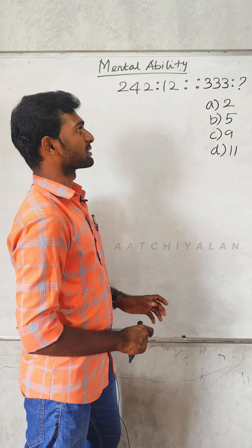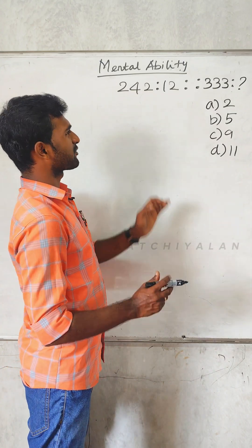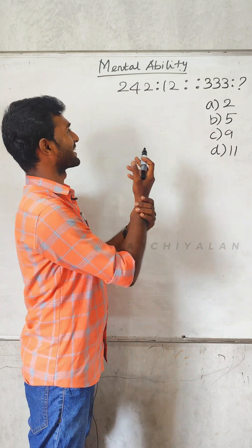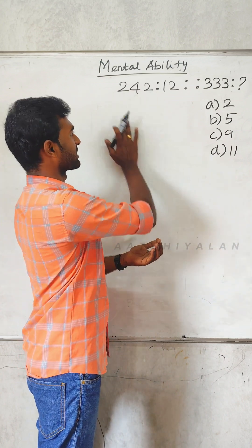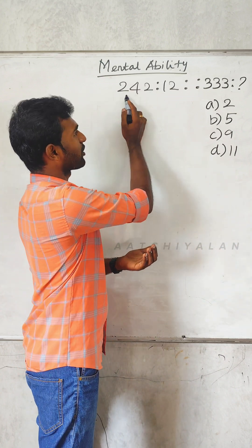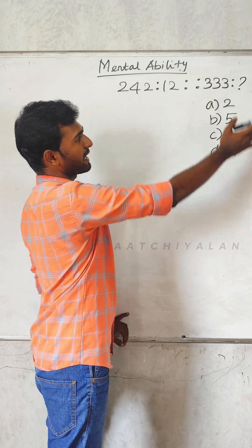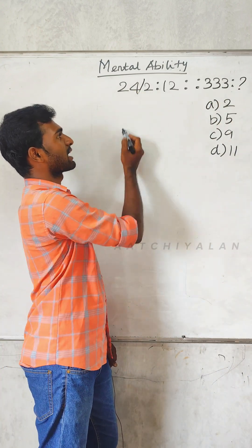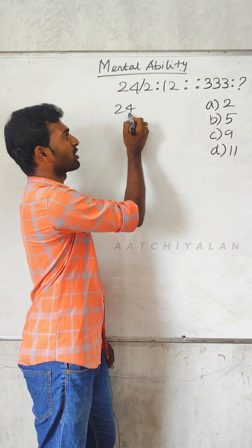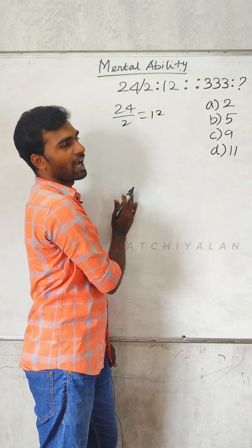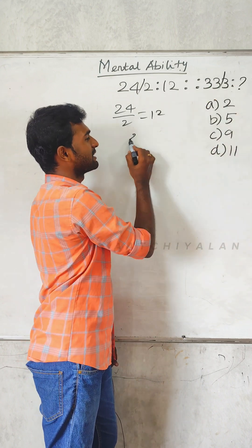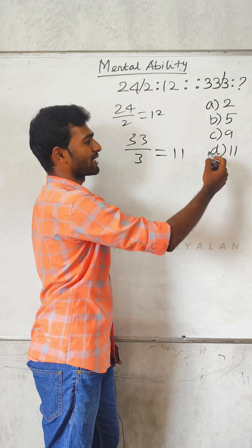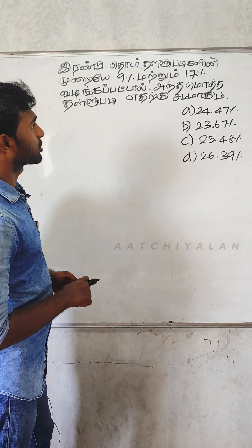The question is stories. If you follow this question, you will be able to answer it. 242, 12, 3, 3, 3. If you divide — 24 by 2 is 12. 33 by 3 is 11. So the answer is 11.